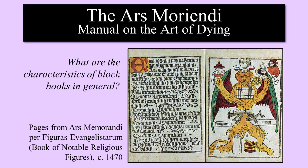Early block books were only printed on one side because they were printed using a hand rubber, while later blocks were printed on both sides because they were done on a press. Because of the specialization of crafts in the secular world, there was a distinction between the designer and the cutter of the blocks by the trade guilds. The monastic designer, however, often cut his own woodblock. Usually cutters were members of carpentry guilds.